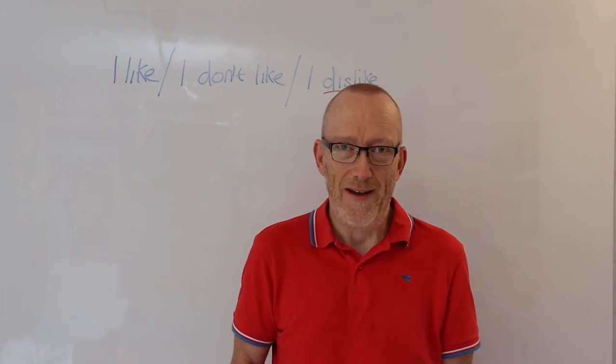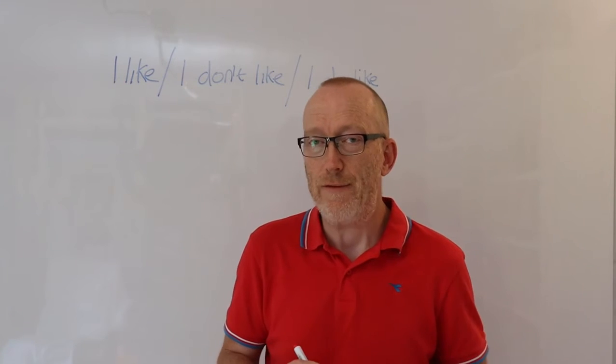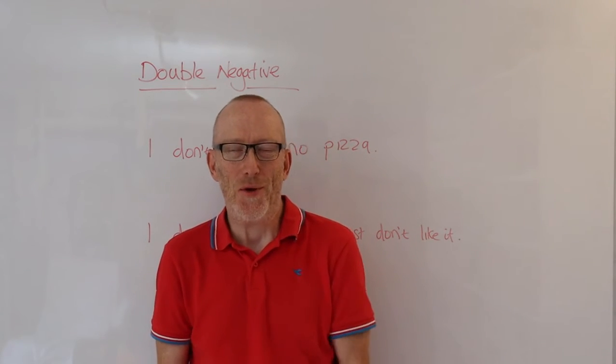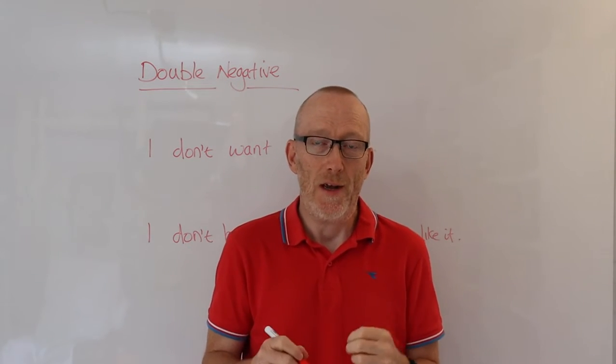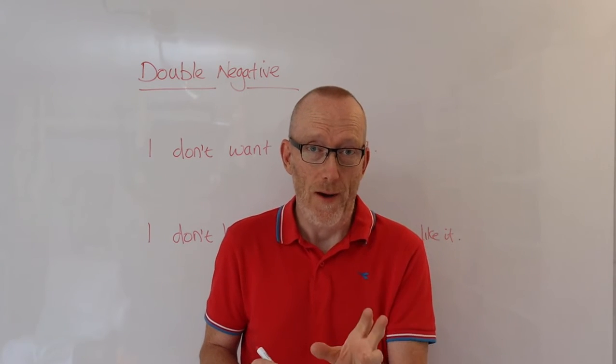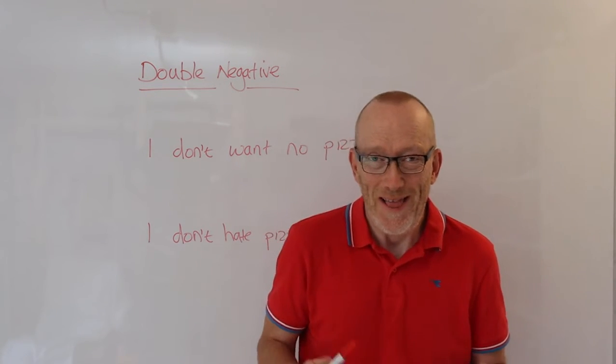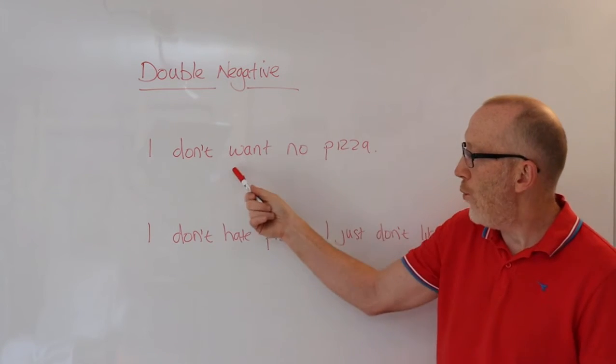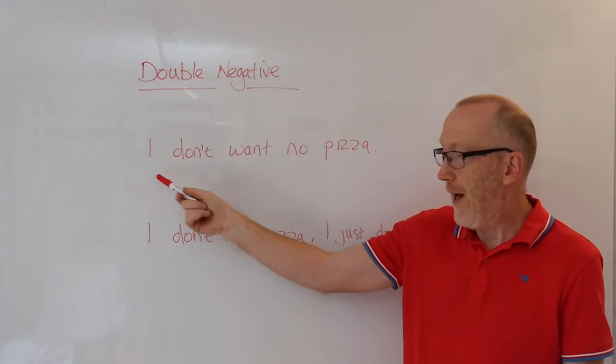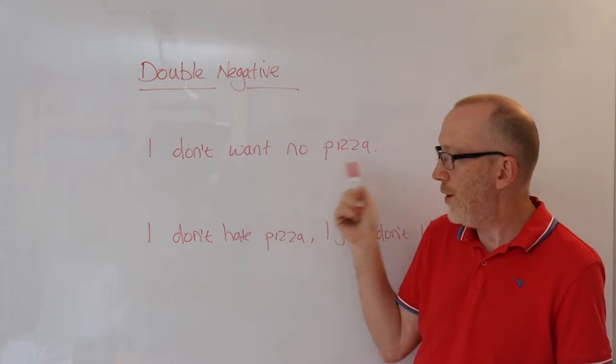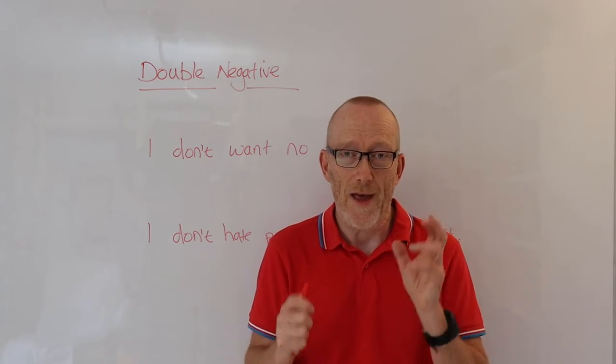Now, while we're on the subject of negative sentences, let's talk about the double negative. Now the double negative in English, it's really important that you understand why double negatives are incorrect, but also why some double negatives are actually okay. So let's just take a look at a simple sentence. I don't want no pizza. Now in some languages, this would be correct. Some languages do have double negatives and they are grammatically correct.